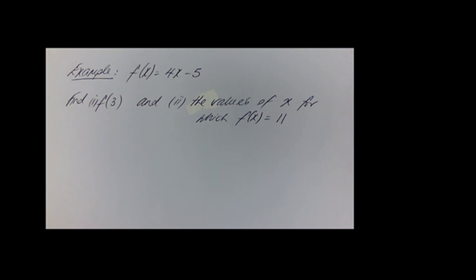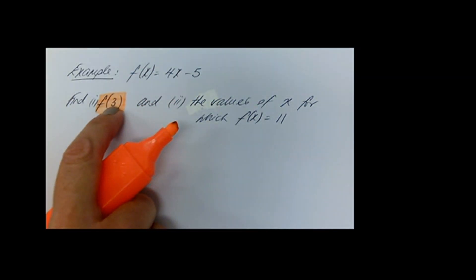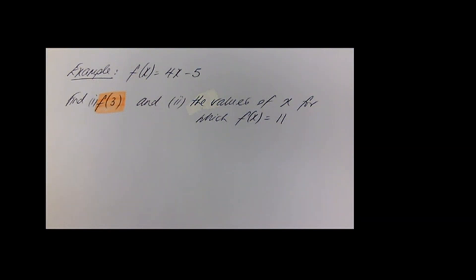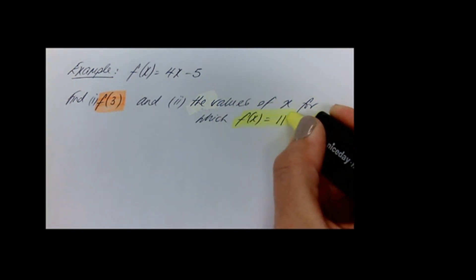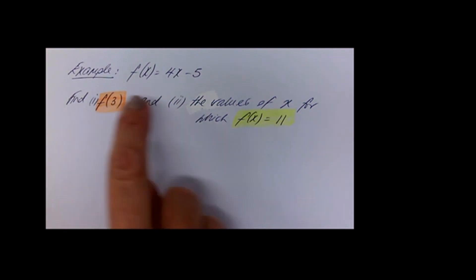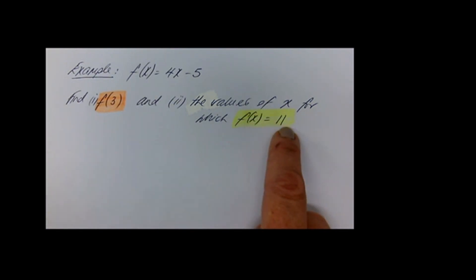Take a look at these two very common types of questions: one where we're asked in the function 4x minus 5 to find f of 3 — here the 3 replaces the x in the notation — and quite different is when it asks for the values of x for which f of x is equal to 11. Watch out for that difference. One has a number replacing x in the brackets, and the other has the function equal to something.